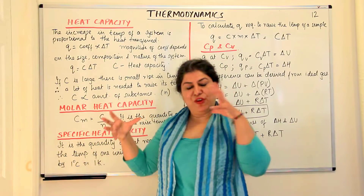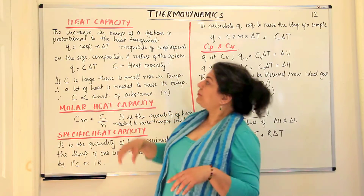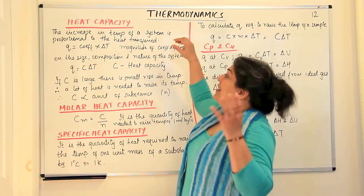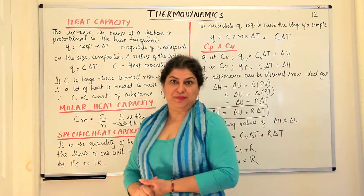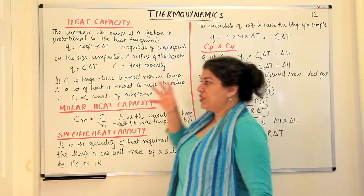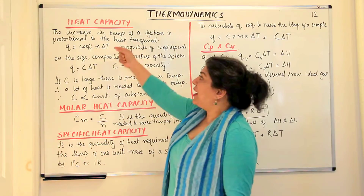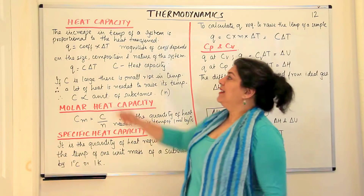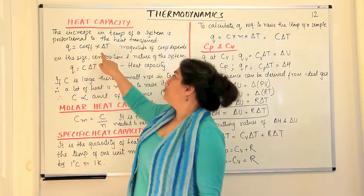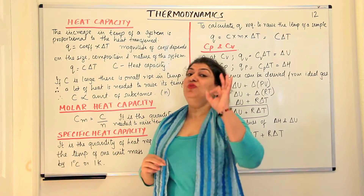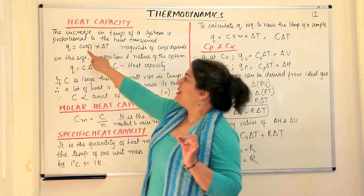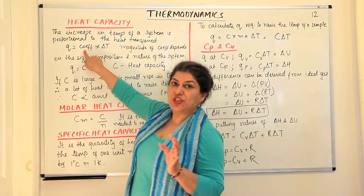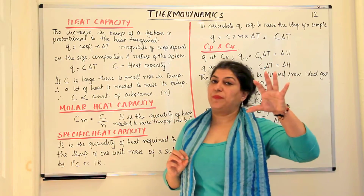There will be an increase in temperature if you're providing heat to a substance. The increase in temperature of a substance is proportional to the amount of heat transferred to the system. If you want to remove the sign of proportionality, you need a constant — a coefficient. So we say heat transferred equals the coefficient times the increase in temperature, delta T.